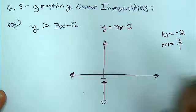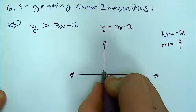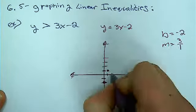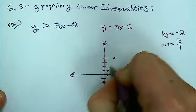So I'm going to follow the slope by rising 3, running 1. Rise 3, running 1. So there's my slope.